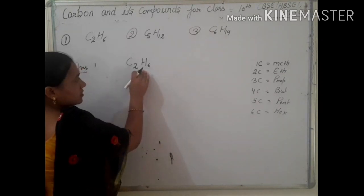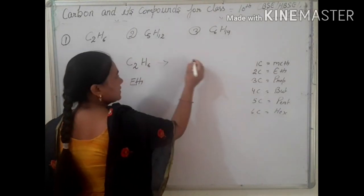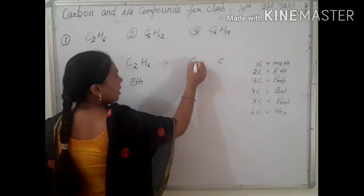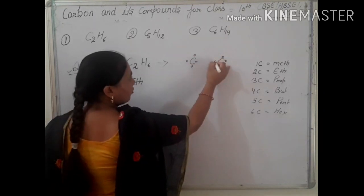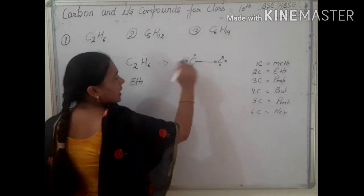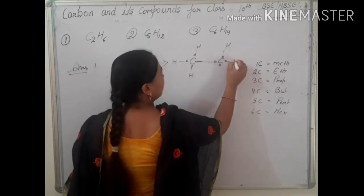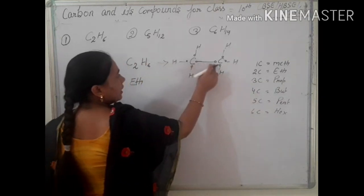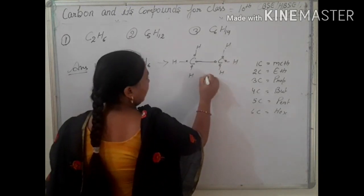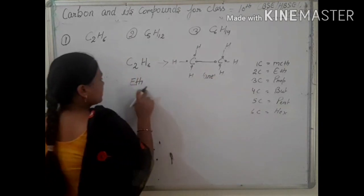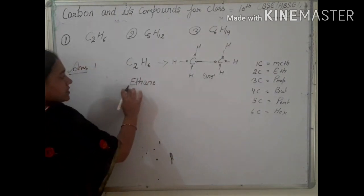In C2H6, there is a single bond between the carbon atoms. Each carbon atom has four electrons in the outermost shell; one electron is used to bond the two carbon atoms together, and the remaining electrons make bonds with hydrogen. Since carbon atoms have single bonds, we add '-ane' after 'eth.' So the name of C2H6 is ethane.